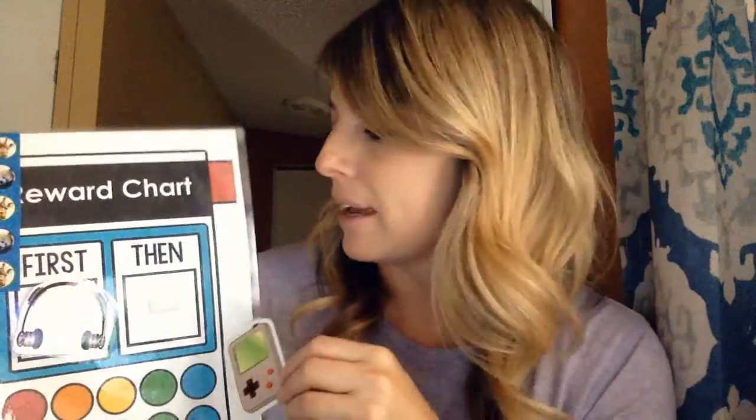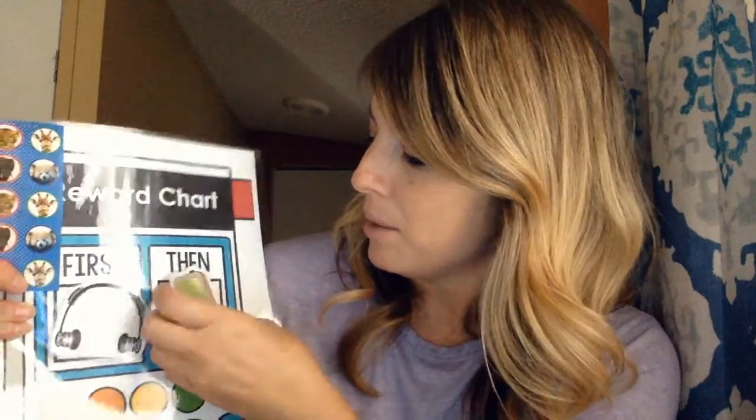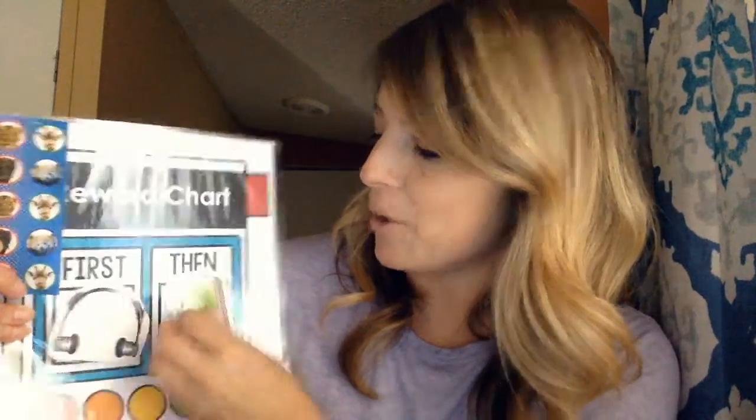If they like reading a book, if they like playing with Play-Doh, you can easily cut out a picture, place it on here, and first we're going to work, then we're going to play our video game or work with Play-Doh. You can also use this in: first we're going to brush our teeth, then we're going to go to bed. This can also keep your child on task with small, manageable tasks.